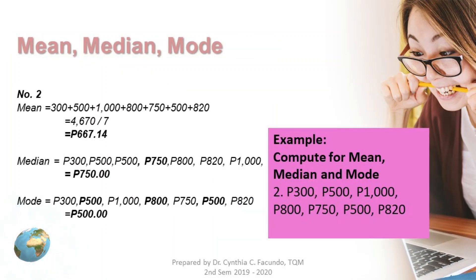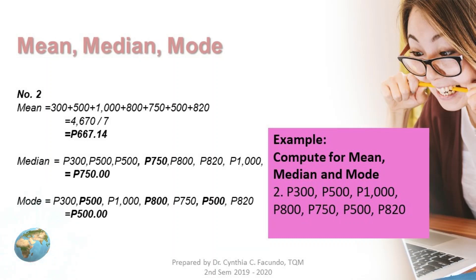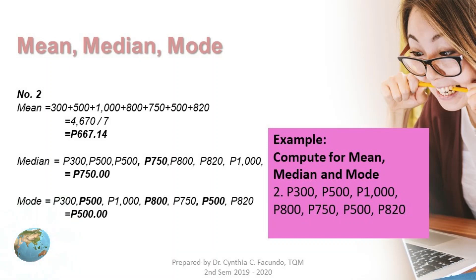Example number 2: compute the mean, median, and mode. The given values are 300 pesos, 500, 1,000 pesos, 800 pesos, 750, 500, and 820. There are 7 numbers. You total them all — 4,570 divided by 7 — so the mean is 567.14 pesos.